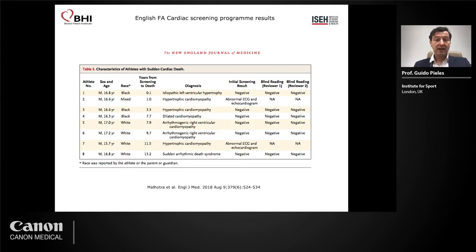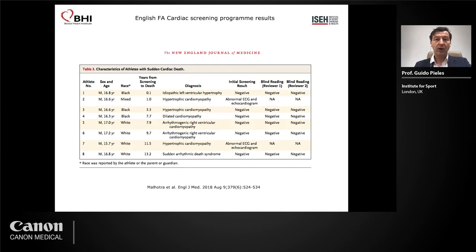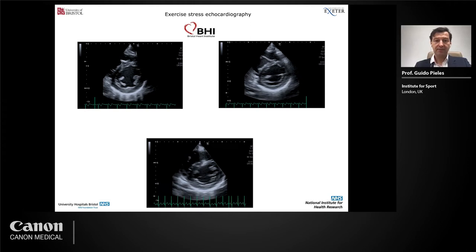A recent paper published from FA data in the UK showed that in screening of over 11,000 16-year-old footballers, structural abnormalities such as hypertrophic cardiomyopathy were the most common cause of sudden cardiac death events. Despite screening by ECG and echocardiogram, many of these young athletes who sadly died would not have been picked up by resting ECG and resting echocardiogram. The hypothesis of our research group and others was: why don't we image during exercise? Because 50% of sudden cardiac death in hypertrophic cardiomyopathy in athletes happens during or around the time of exercise.